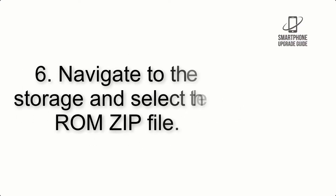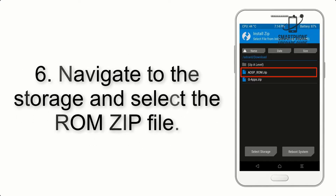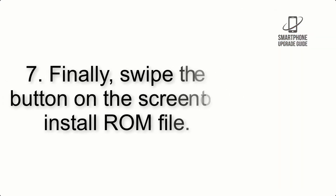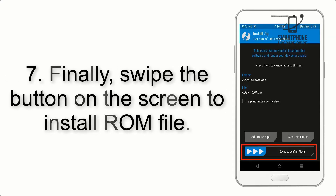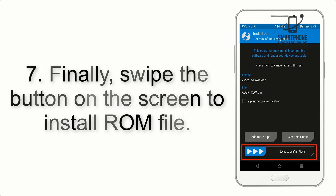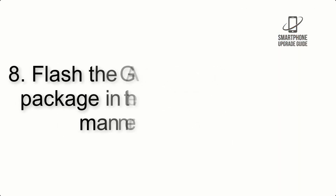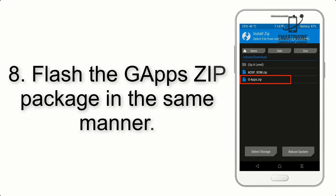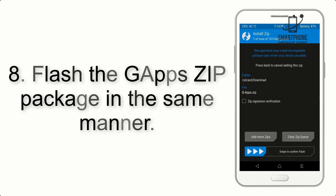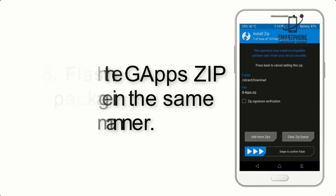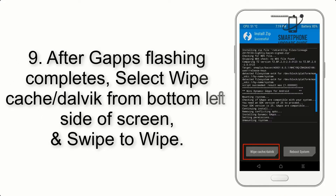Step 6: Navigate to the storage and select the ROM zip file. Step 7: Swipe the button on the screen to install the ROM file. Step 8: Flash the GApps zip package in the same manner.